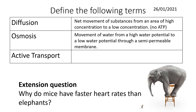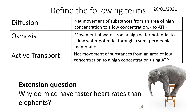In osmosis, we only talk about the movement of water — from a high water potential to a lower water potential through a semi-permeable membrane. Lastly, active transport is the net movement of substances from an area of low concentration to high concentration, requiring the use of ATP.